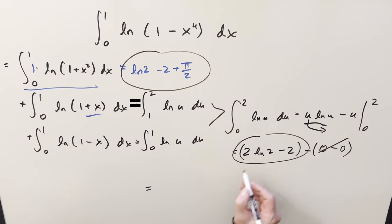And so just adding up terms here and here, we're going to get 3 ln 2 minus 4 plus pi over 2, and that's it.